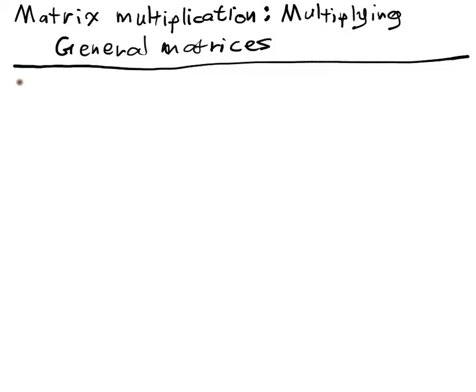In the last video we learned how to multiply a matrix by a column and that allowed us to encode a system of linear equations really compactly. But we can also multiply general matrices, right?